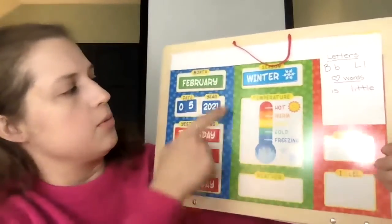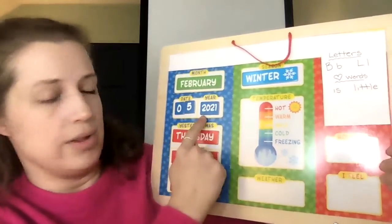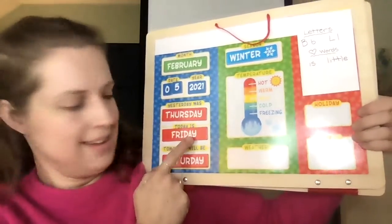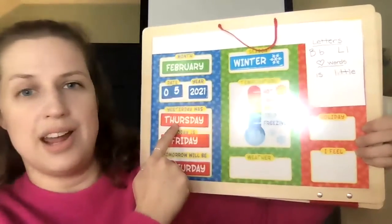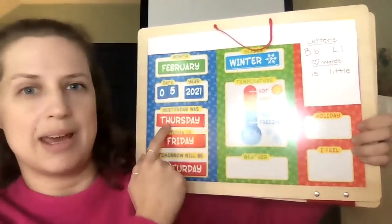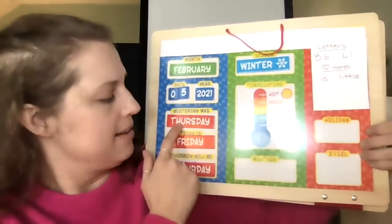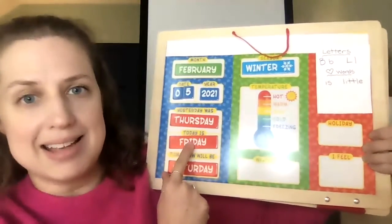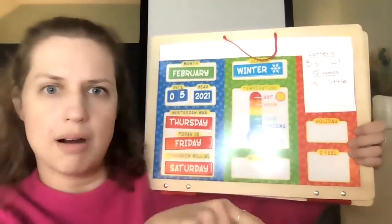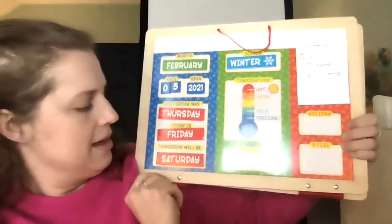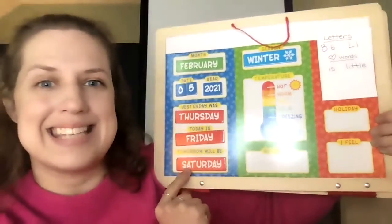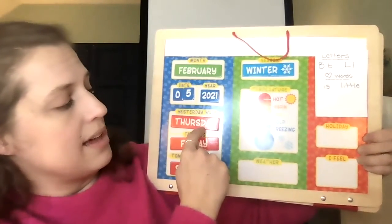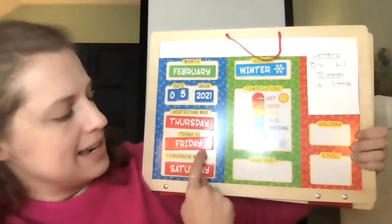If we look, we know the date already — February 5th, 2021. Down here we have the days: yesterday, today, and tomorrow. If yesterday was Thursday — with that TH making you stick out your tongue — today is Friday. Friday is the last day of the school week, which means tomorrow will be a weekend day. The first weekend day is Saturday. Saturday follows the pattern of every day having the letters D-A-Y, day.